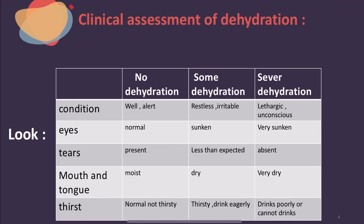Now, clinical assessment of dehydration — this is the most important part of the topic. For example, if a child presents with vomiting, we take a full history from the mother. In the pediatric age group we immediately think about dehydration and must do a clinical assessment. The assessment must answer two questions: first, does the child have dehydration or not? Second, what is the degree of dehydration? This is very important because the treatment depends on the degree. We have three degrees: no dehydration, some dehydration, and severe dehydration. Some dehydration is treated with oral rehydration solution, while severe dehydration is treated with IV fluid.